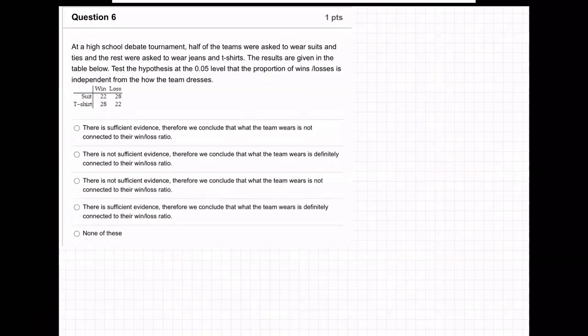Okay, so on this problem, it says at a high school debate tournament, half of the teams were asked to wear suits and ties and the rest were asked to wear jeans and t-shirts. The results are given in the table below. Test the hypothesis at the .05 level if the proportion of wins and losses is independent from how the team dresses.